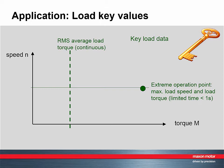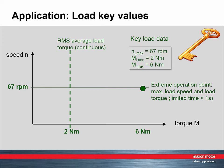Let's take specific values as an example. We assume that we need two newton meter continuous torque and six newton meter maximum torque for a quick acceleration to 67 rpm.